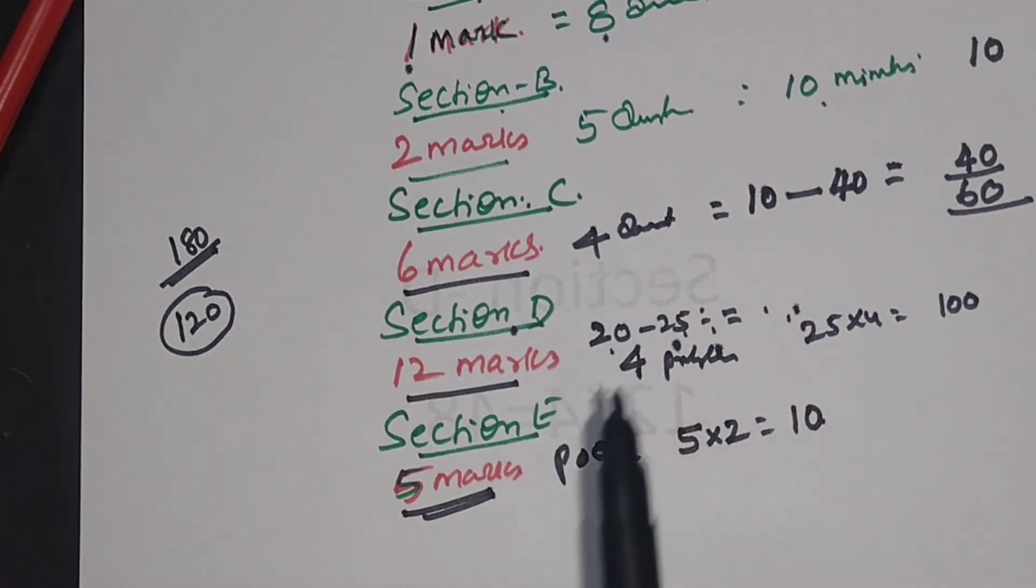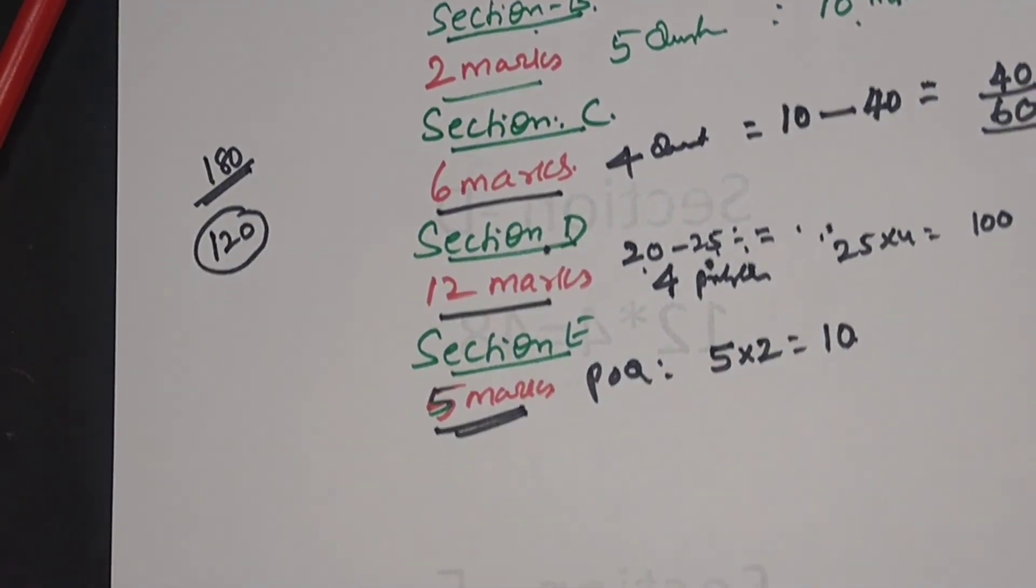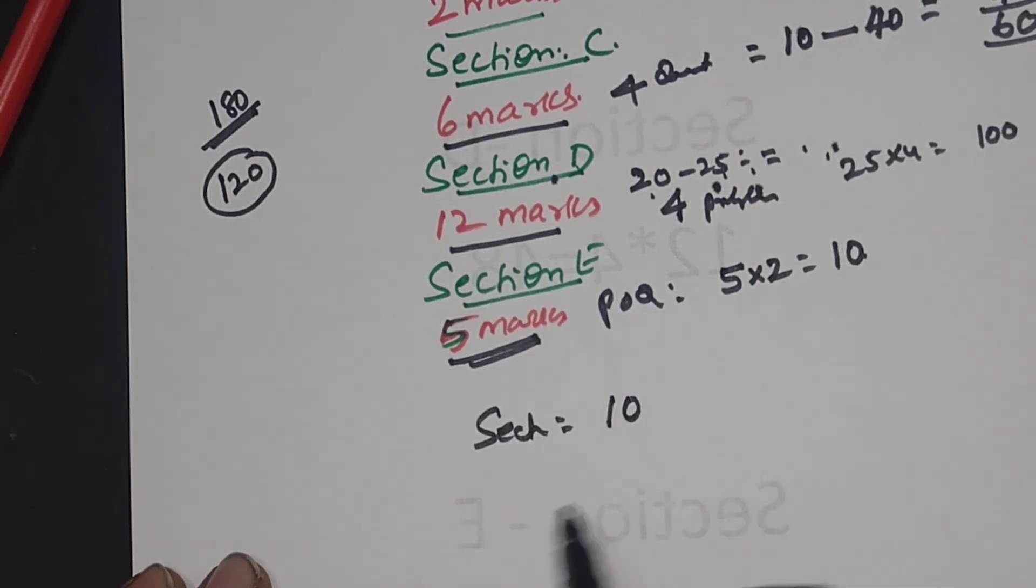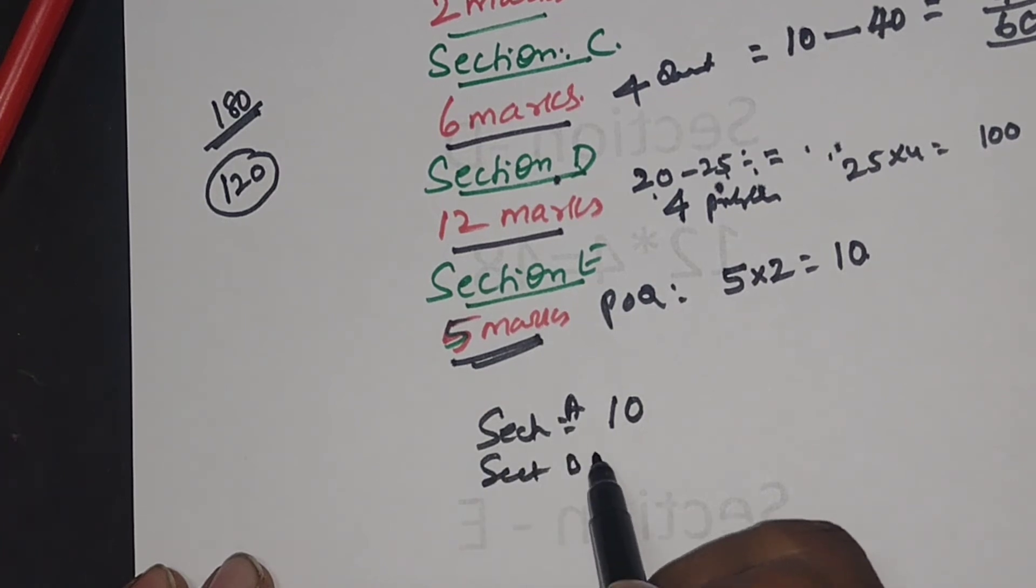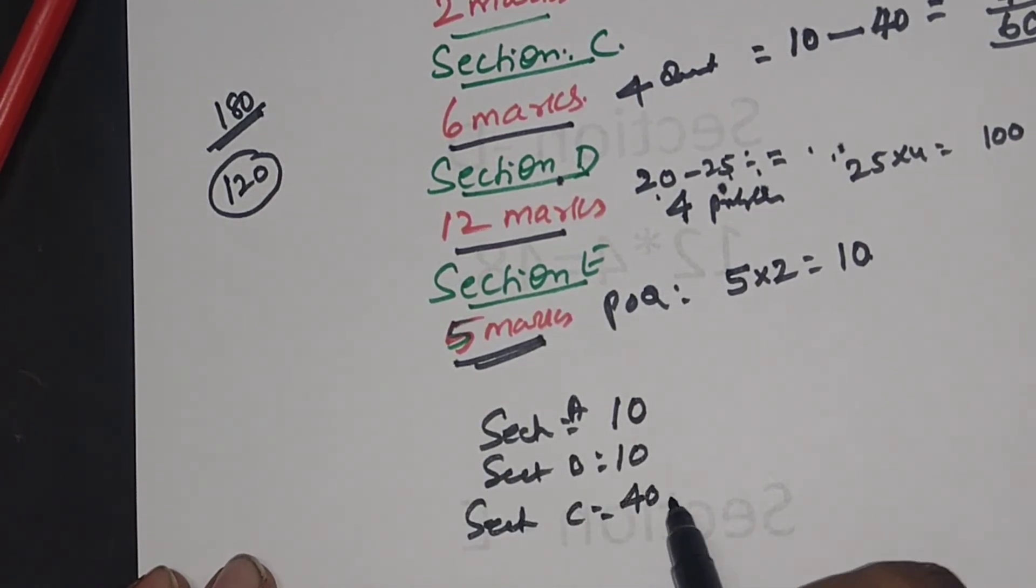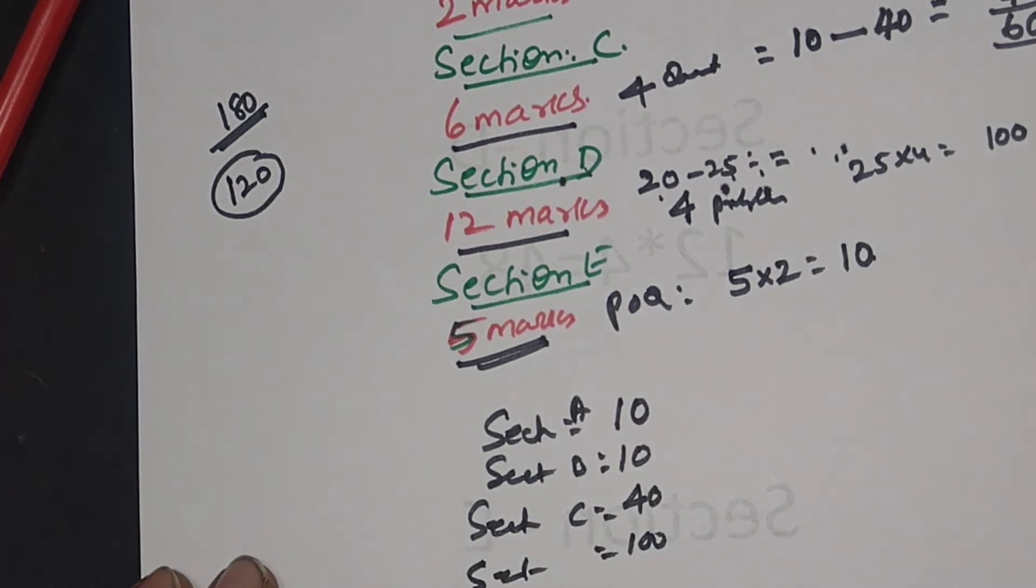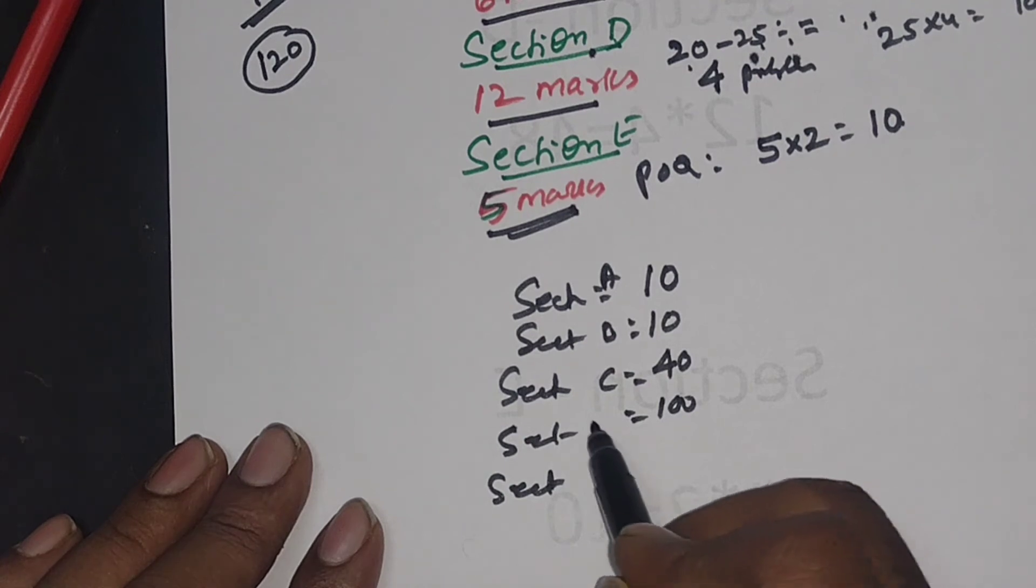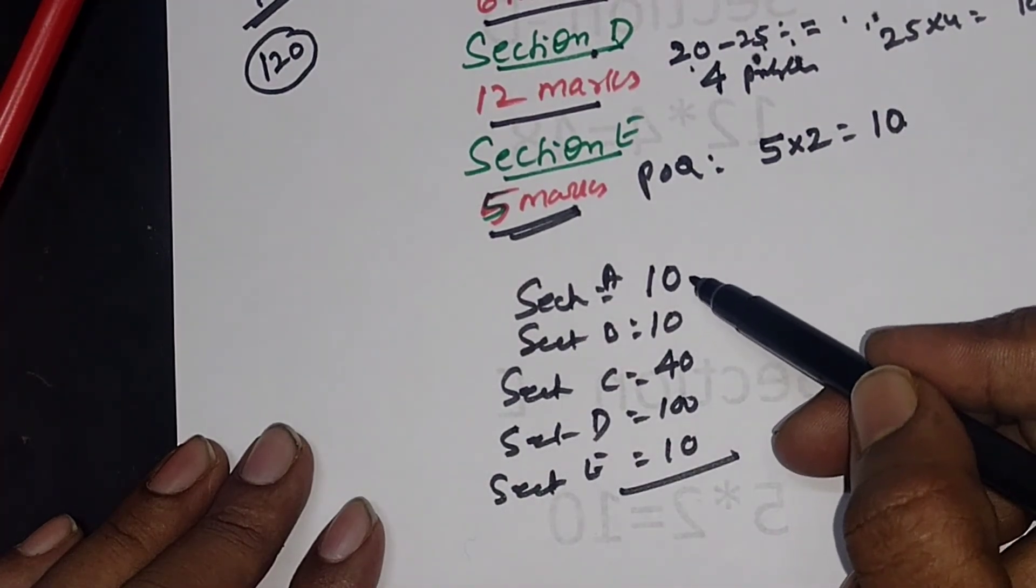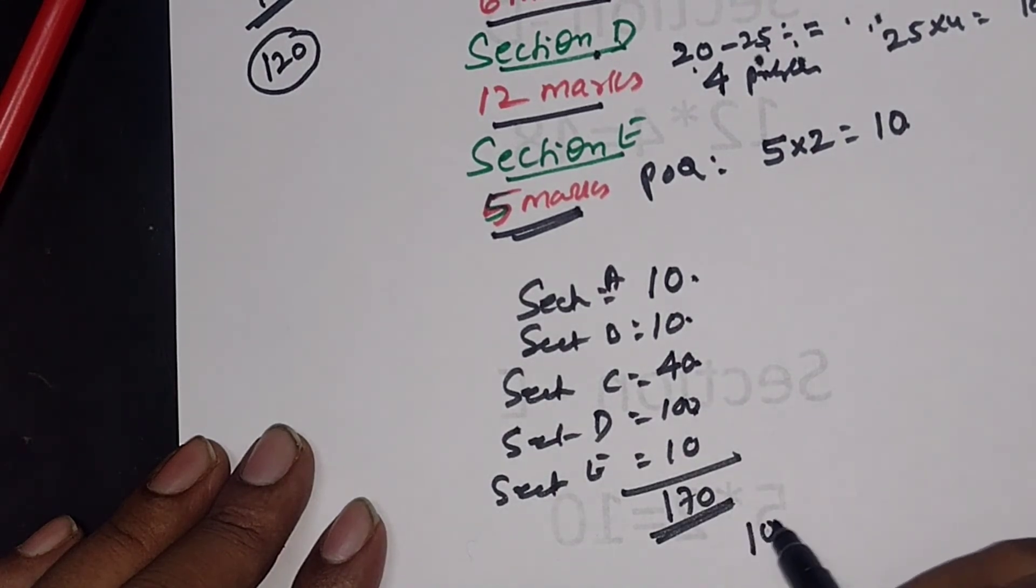Have this concept in your mind. I will repeat once again: section A within 10 minutes, section B also within 10 minutes, section C 40 minutes, section D 100 minutes, and section E 10 minutes. Overall, 10, 20, 60, 160, 170. At last in your hand you have 10 minutes.